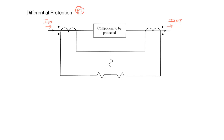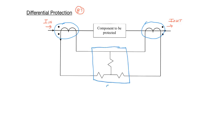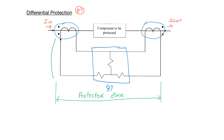A differential protection system consists of current transformers on both ends of the protected component, and of course an 87 differential relay. Differential protection uses the principle of Kirchhoff's current law — the current entering the protected zone must equal the current leaving the protected zone. The current transformers are the devices that define the boundary for the protected zone.